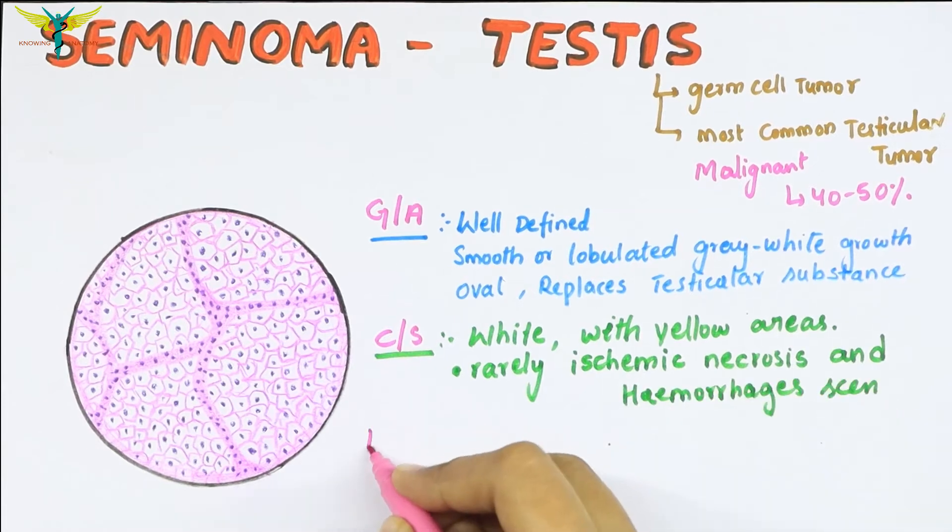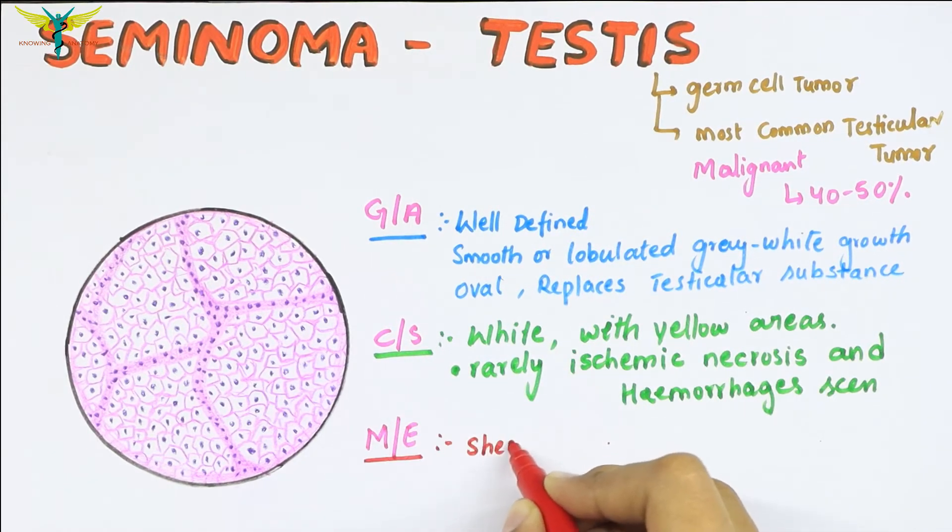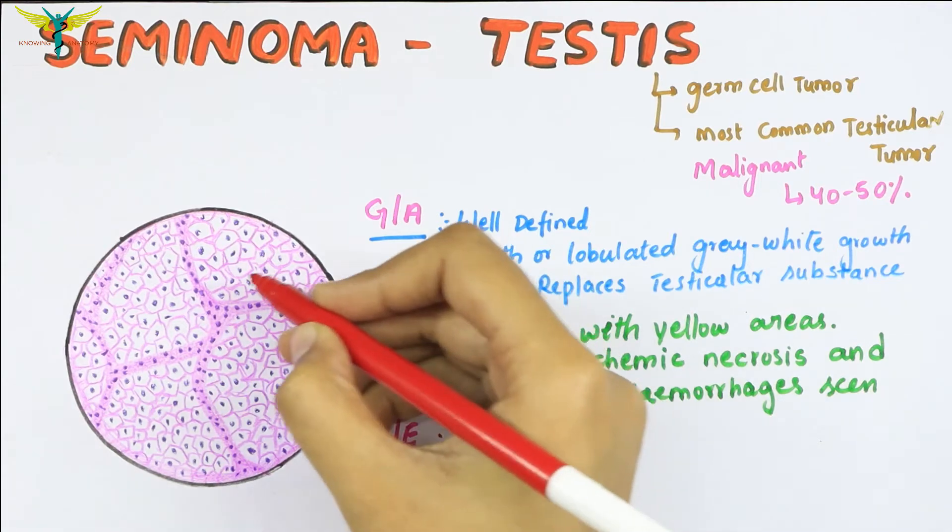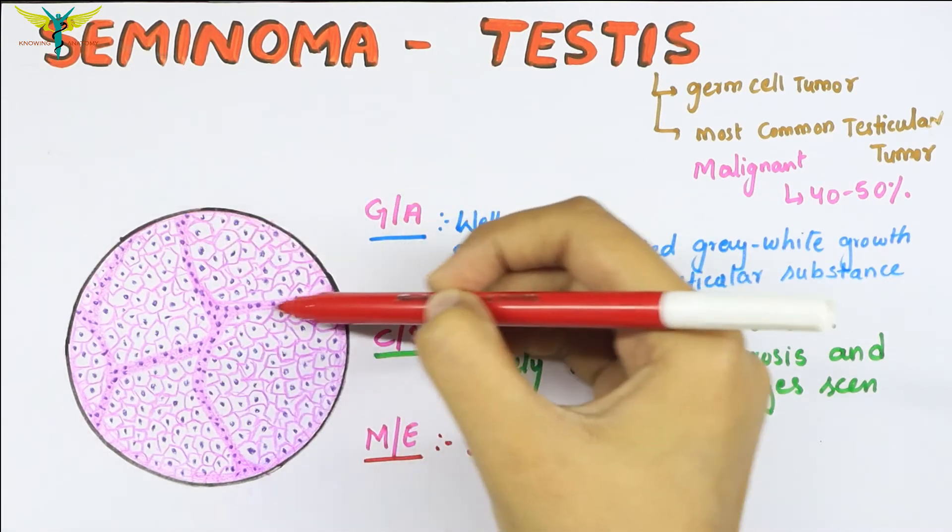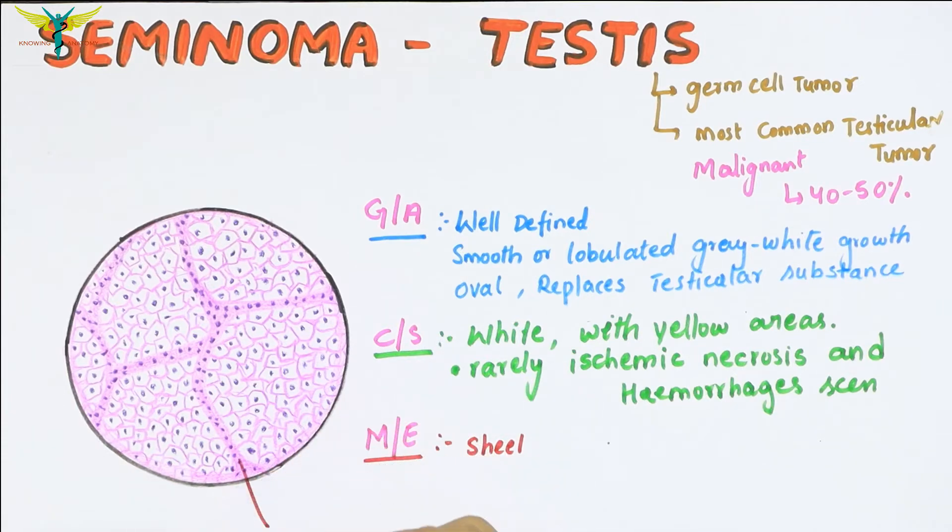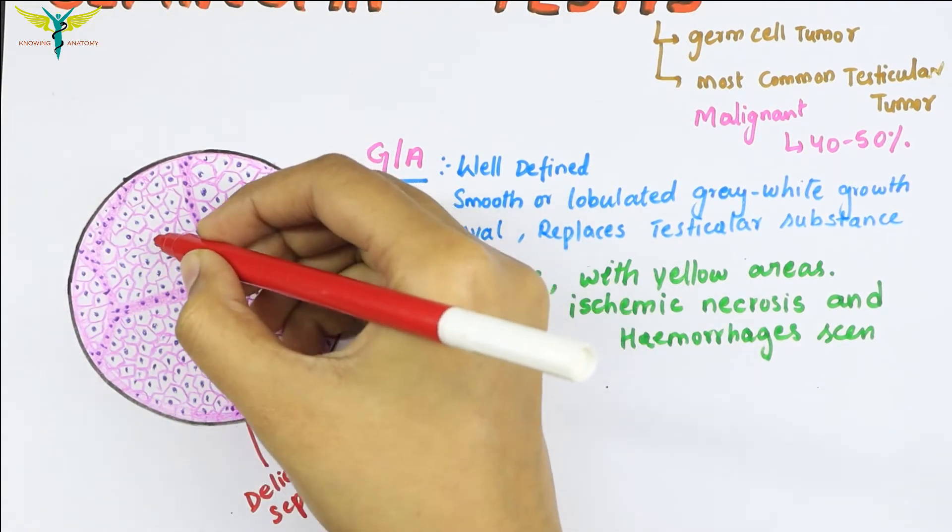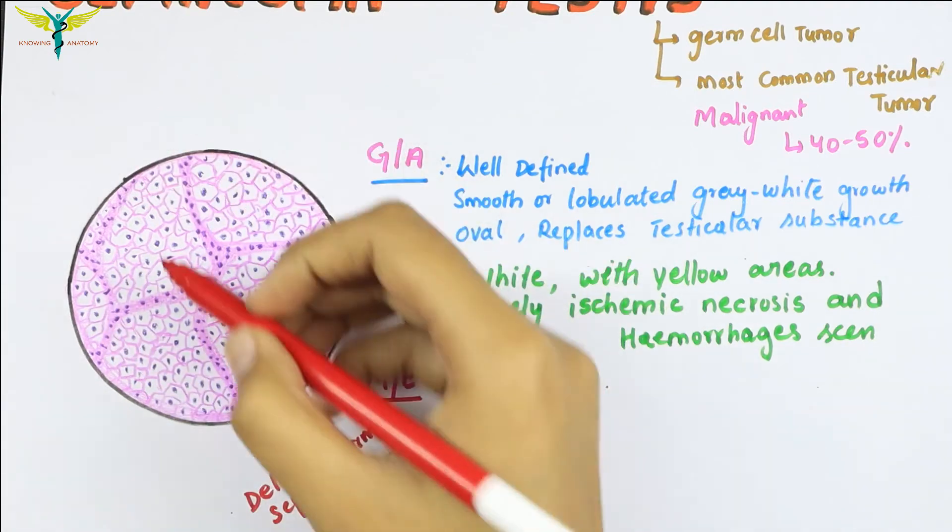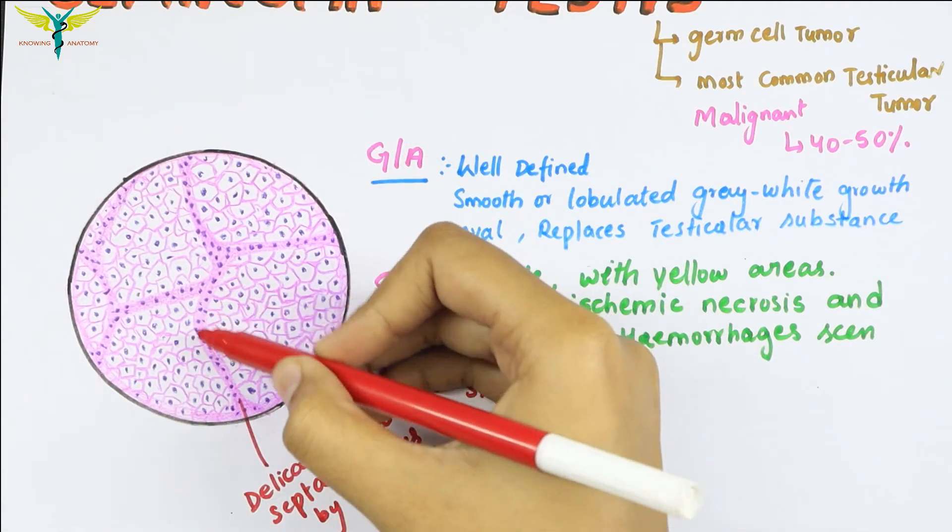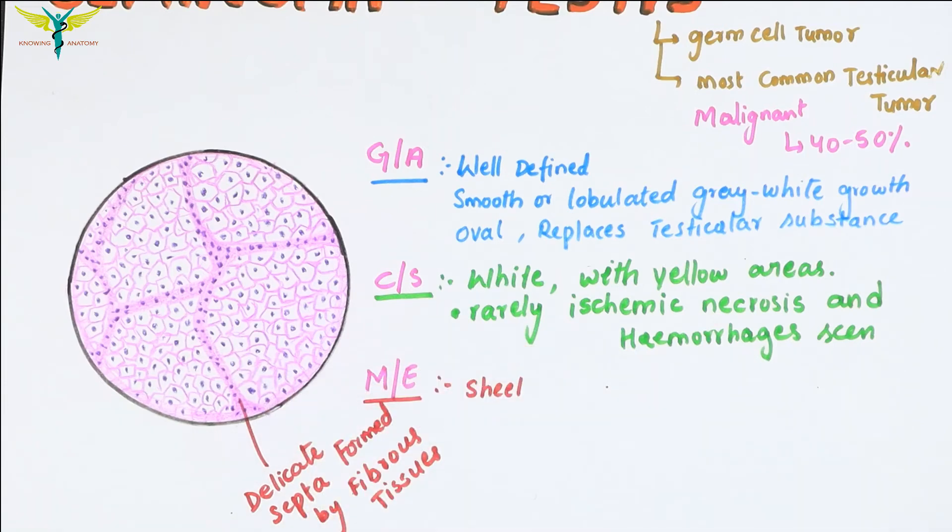The microscopic examination shows sheets of uniform cells divided into lobules by delicate fibrous tissue septas. These are the delicate septas of fibrous tissues dividing the sheets of uniform cells.